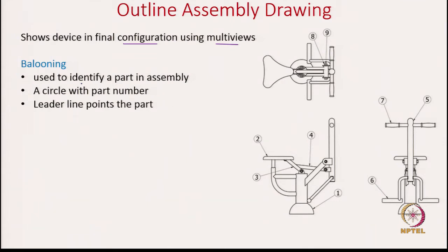Ballooning helps you to identify the parts in an assembly. The item number is written — for example, number 2 — enclosed with a circle, and then you have a leader line which takes you to the part. You use an arrow at the end of the line to point to the part.